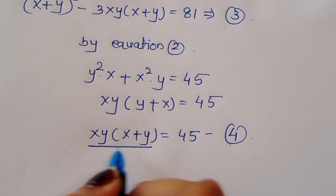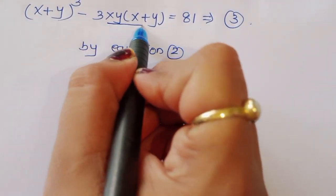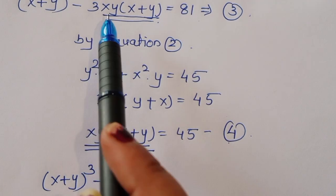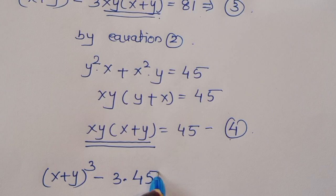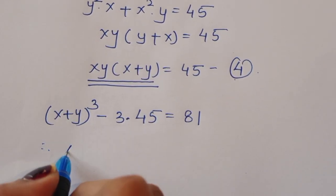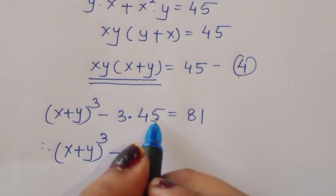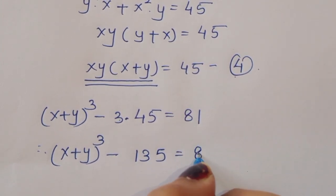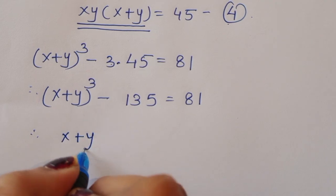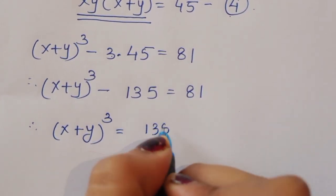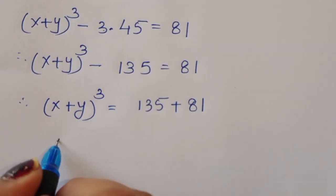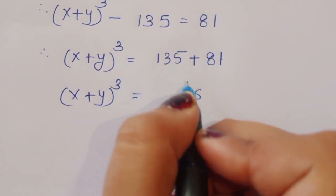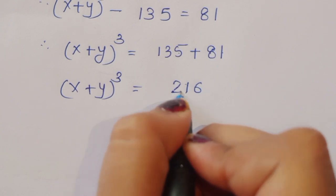Substituting equation 4 into equation 3: since xy(x + y) = 45, we replace 3xy(x+y) with 3×45 = 135. So (x + y)³ − 135 = 81, therefore (x + y)³ = 135 + 81 = 216.